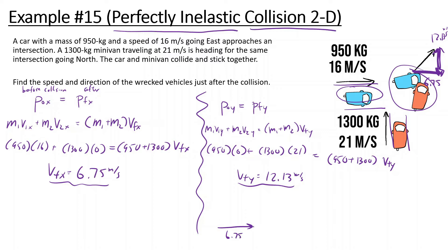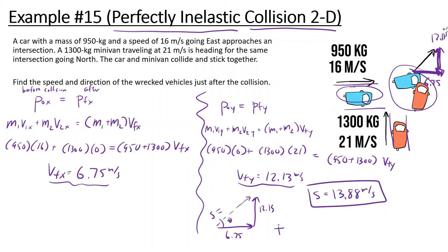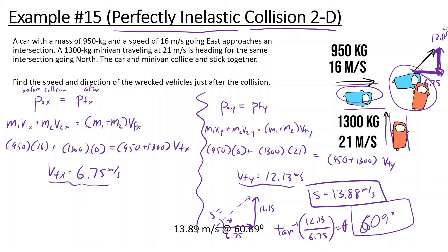We know in the X direction it's going 6.75, and in the Y direction it's going 12.13. To find the speed, we use the Pythagorean theorem: square root of 6.75 squared plus 12.13 squared gives us 13.88 meters per second. For the angle, we use inverse tangent of 12.13 divided by 6.75, which gives us 60.9 degrees.